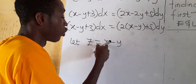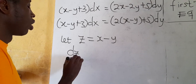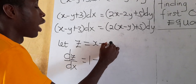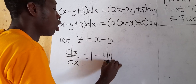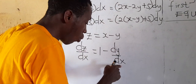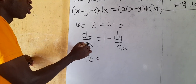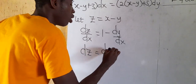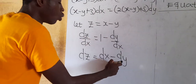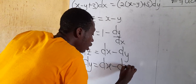We differentiate z with respect to x: dz/dx equals 1 minus dy/dx, since y is a dependent variable. Multiplying through by dx gives dz equals dx minus dy. Making dy the subject: dy equals dx minus dz.